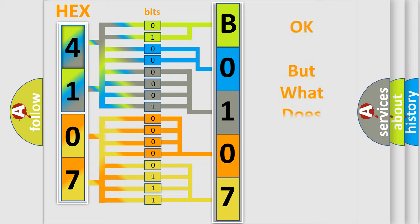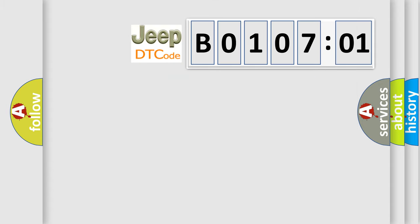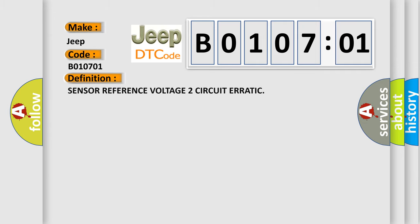We now know in what way the diagnostic tool translates the received information into a more comprehensible format. The number itself does not make sense to us if we cannot assign information about what it actually expresses. So, what does the diagnostic trouble code B010701 interpret specifically for Jeep car manufacturers? The basic definition is: sensor reference voltage two circuit erratic.